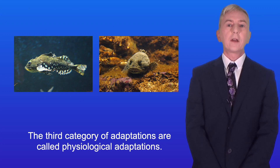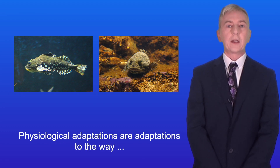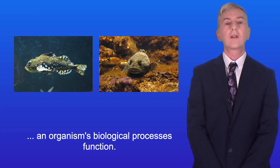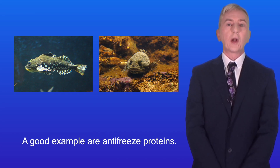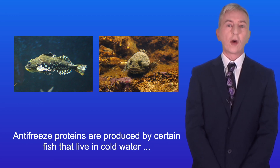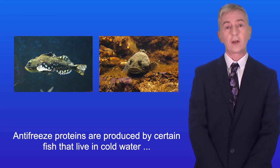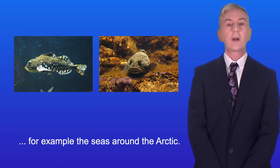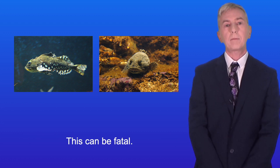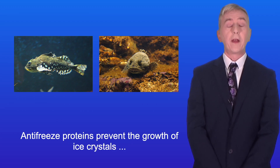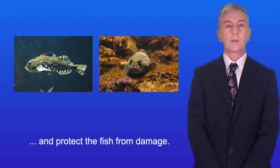The third category of adaptations are called physiological adaptations. Physiological adaptations are adaptations to the way an organism's biological processes function. A good example are antifreeze proteins. Antifreeze proteins are produced by certain fish that live in cold water, for example in the seas around the Arctic. Without antifreeze proteins, ice crystals can develop in the fish's tissues, and this can be fatal. Antifreeze proteins prevent the growth of ice crystals and protect the fish from damage.